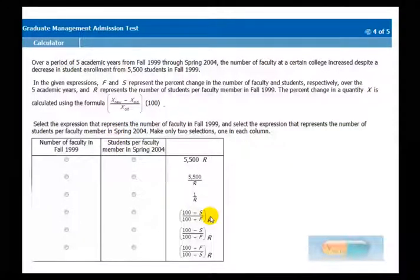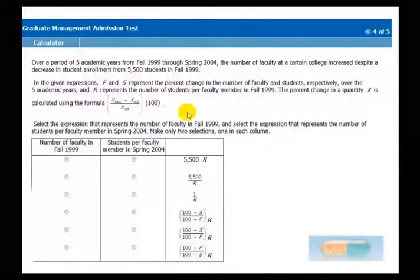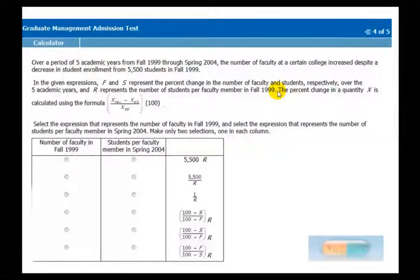And judging from the remaining answer choices, it's going to have something to do with multiplying it by R, which is the number of students per faculty member in 1999. So we need to get the data for 04, and since all the answer choices relate to using the base figure for 1999, you have to somehow get from 1999 to 2004. And to do that, you're going to have to use F and S.